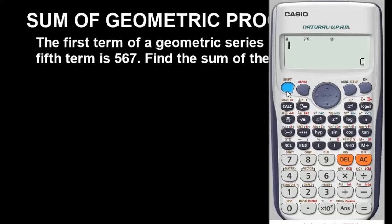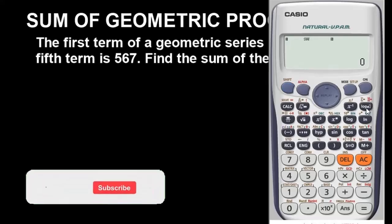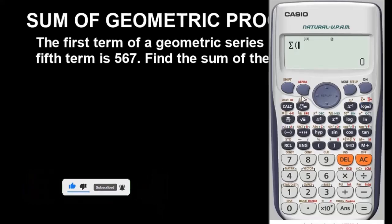To bring out sigma on this calculator, you press shift + log. Sigma is the second command. Once you bring sigma, we're finding the sum of 9 terms. After bringing the sigma, you have to bring out this text button.